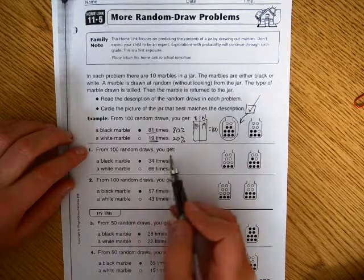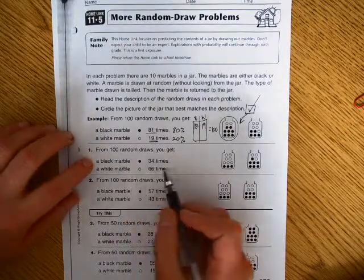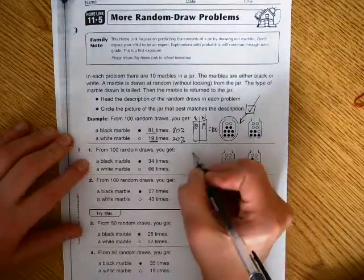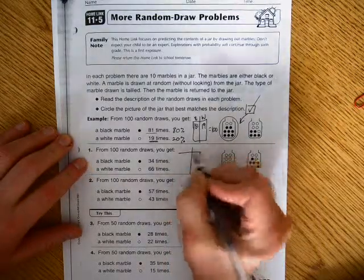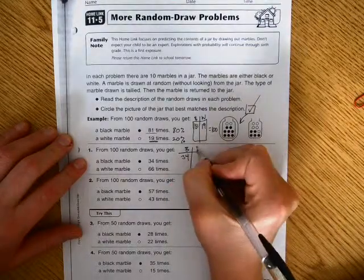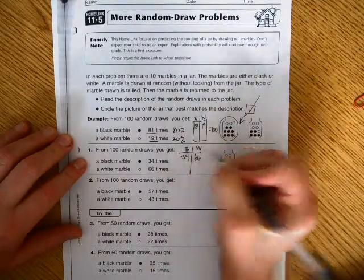Number 1. From 100 random draws, you get a black marble 34 times and a white marble 66 times. So again, if I just make the chart for you, you can see black marble, you would have 34 tallies. A white marble, you would have 66 tallies.